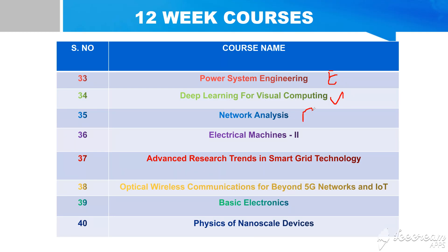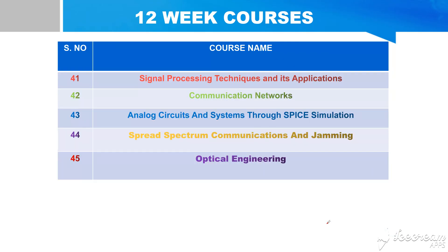Course 33, corresponding to both Electrical. Course 34, Electrical Machines, for Electrical. Course 35, Advanced Power Electronics and Smart Grid Technology. Course 36, Optimal Wireless Communication for Beyond 5G Network and IoT, ECE. Course 37, Basic Electronics, both. Course 38, Physics of Learning Technology, Electronics. Course 39, Signal Processing Techniques and Applications, Electronics. Course 40, Communication Electronics. Course 41, Analog Circuits and Systems Through SPICE, both. Course 42, Spread Spectrum Communication and Jamming, Electronics. Course 43, Optical Communication, Electronics.